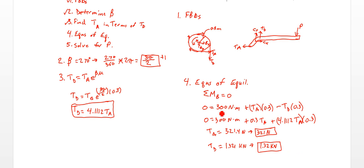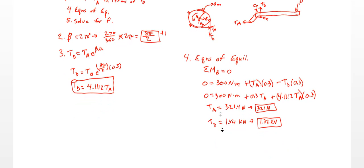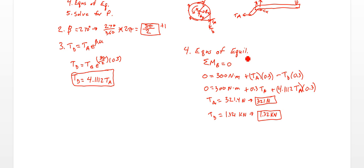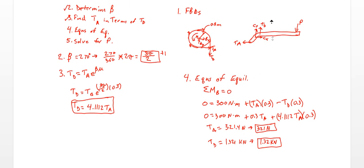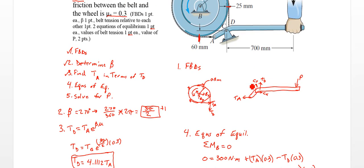So TD is going to be 4.1112 times that, or 1.321 kilonewtons, which goes to 1.32 kilonewtons. Then finally, we can write an equation for the bar here. So we're going to have a little bit of offset where TD and TA are on the bar.